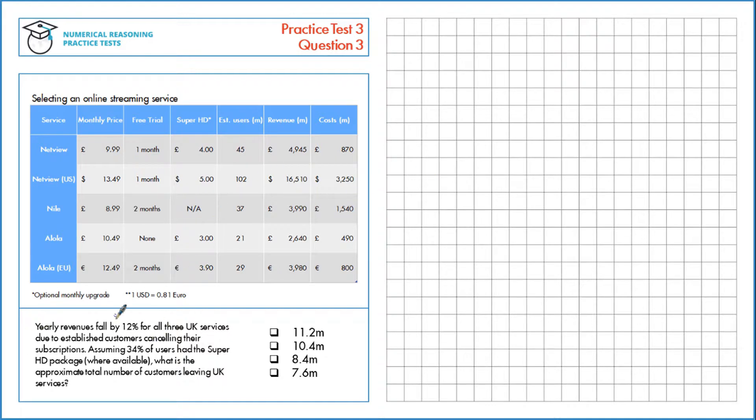First, we know that yearly revenues fall by 12%, so let's calculate that for each of the three companies. We have Netview, we have Niall, and we have Alola. So, for Netview, we have 4,945 million, that's the revenue.